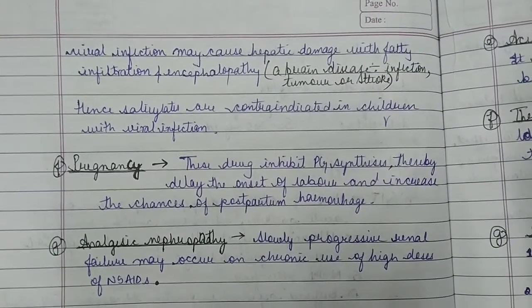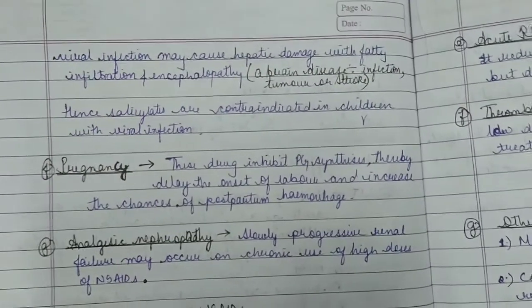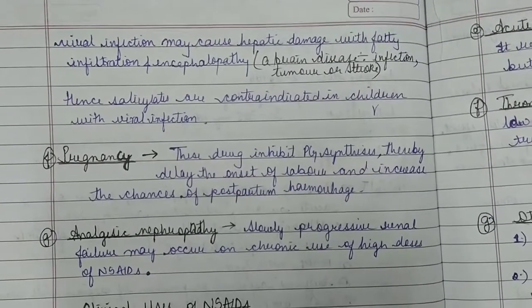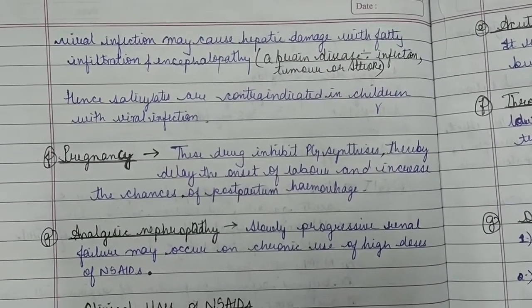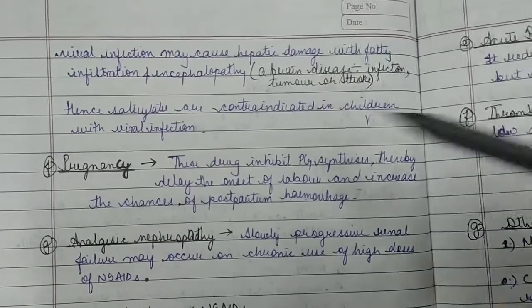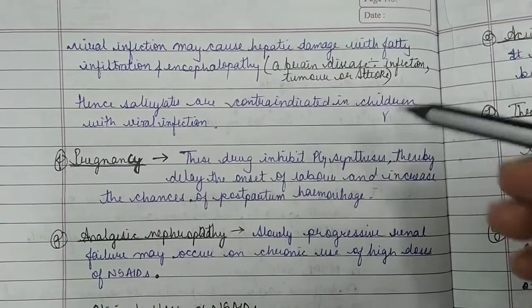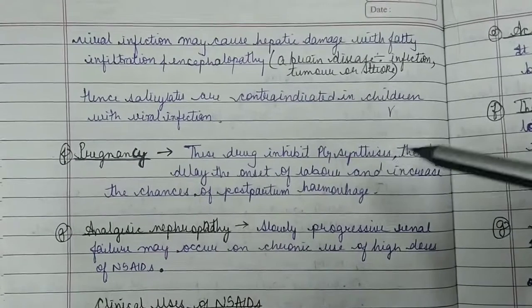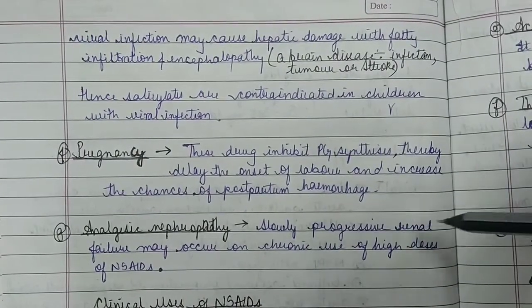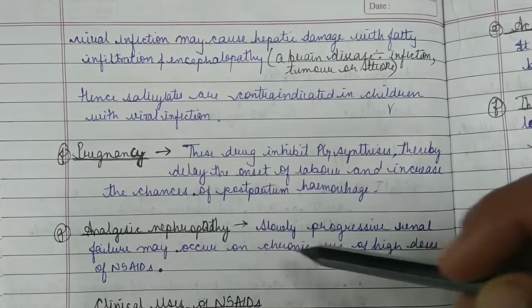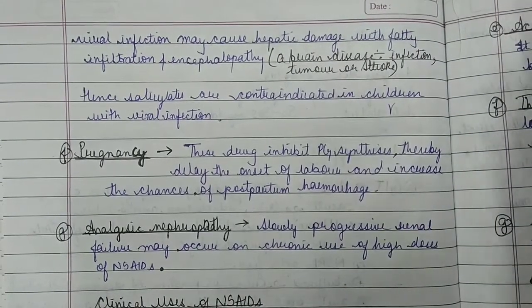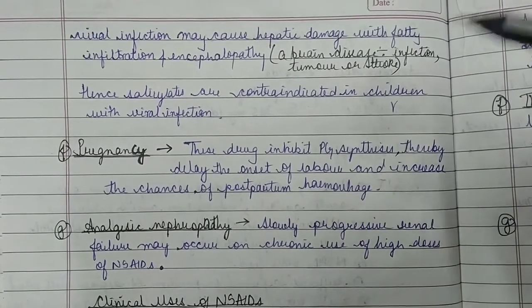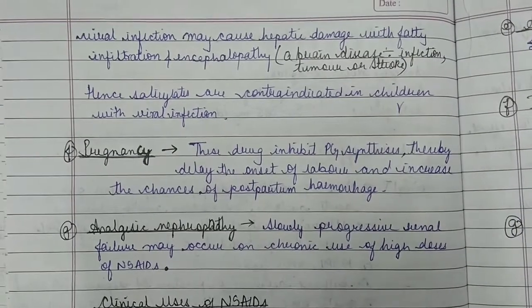In pregnancy, these drugs inhibit prostaglandin secretion, thereby delaying the onset of labor and increasing the chances of post-partum hemorrhage. Additionally, analgesic nephropathy — slowly progressive renal failure — may occur on chronic use of high doses of NSAIDs.